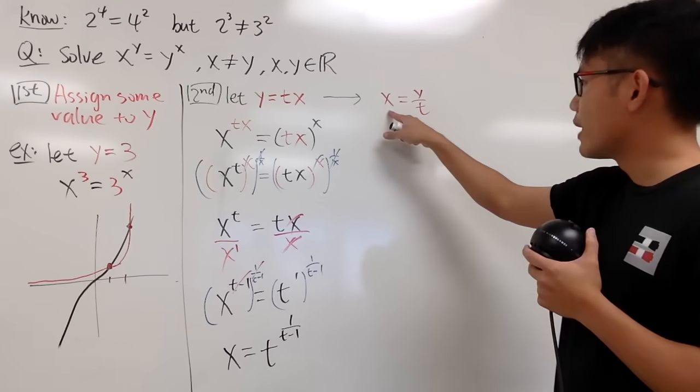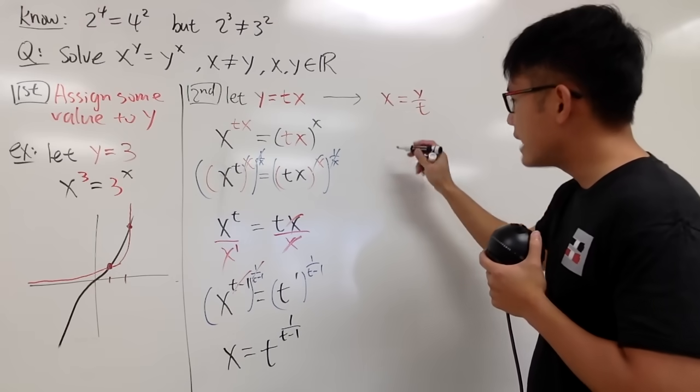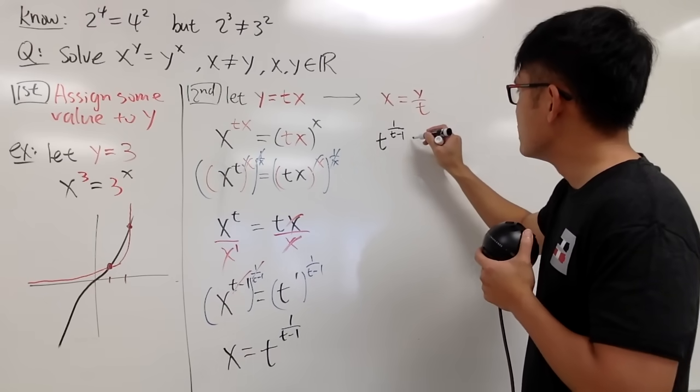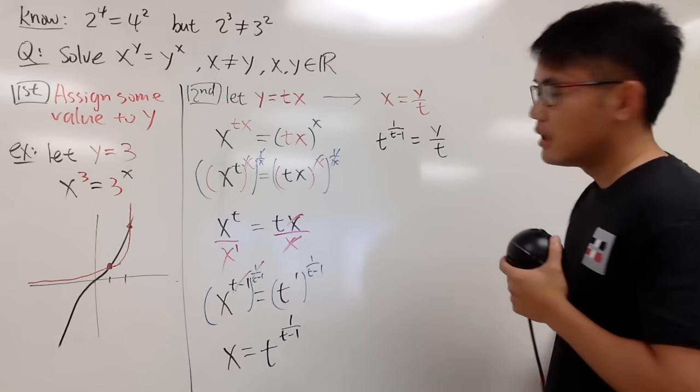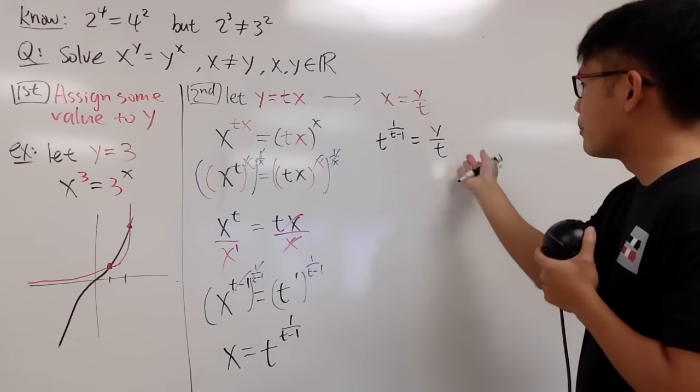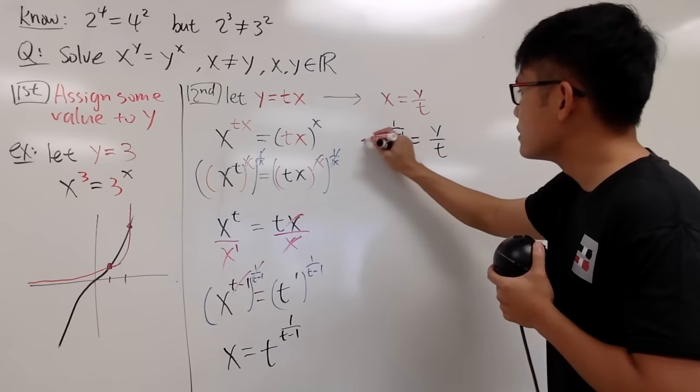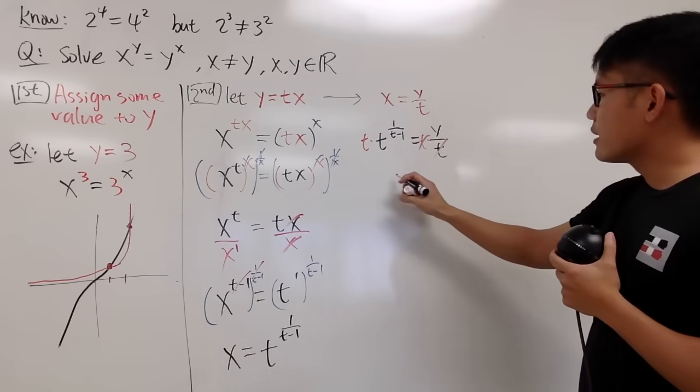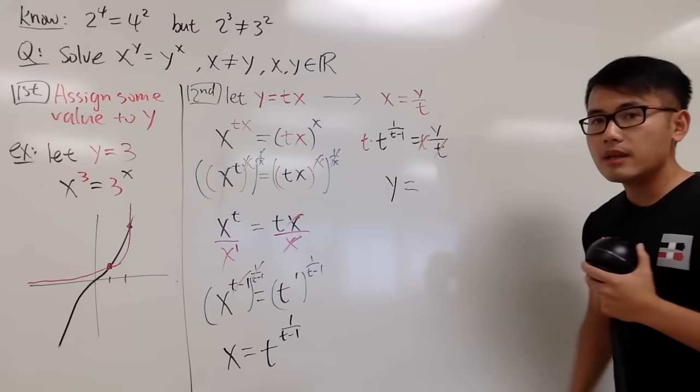And now you have x, which is that. I can just put it right here. So I'm saying that t to the 1 over t minus 1 is equal to y over t. And of course, we can multiply both sides by t, and we can solve this. So multiply both sides by t. So cancel this out. And let me write down the y first.